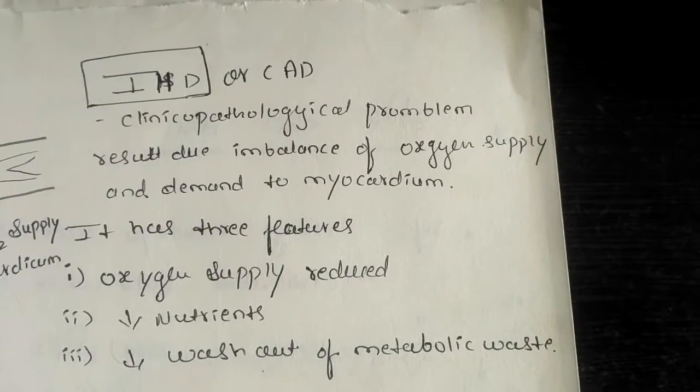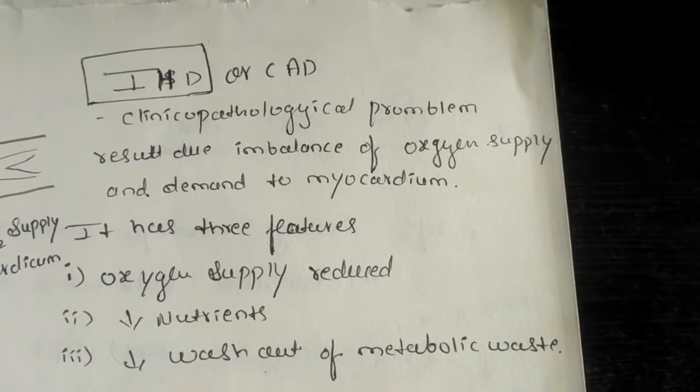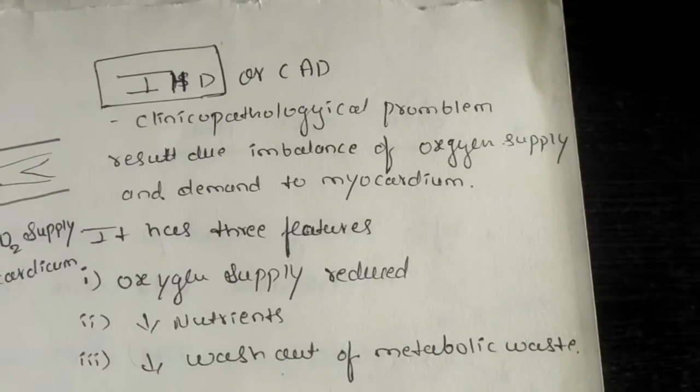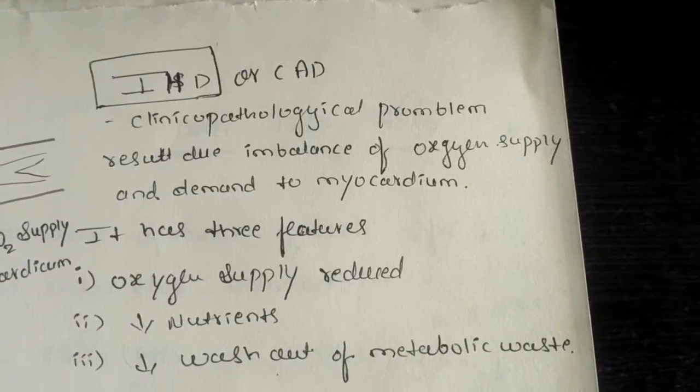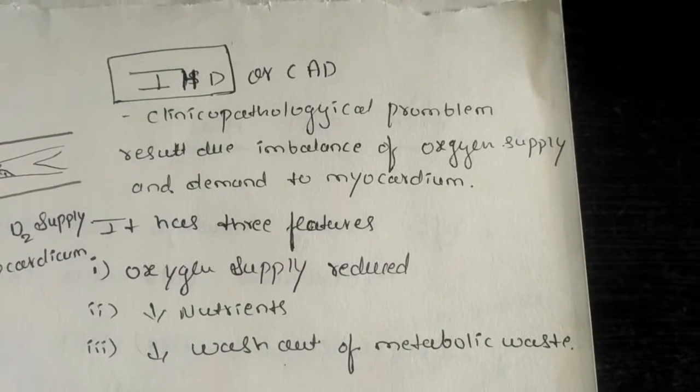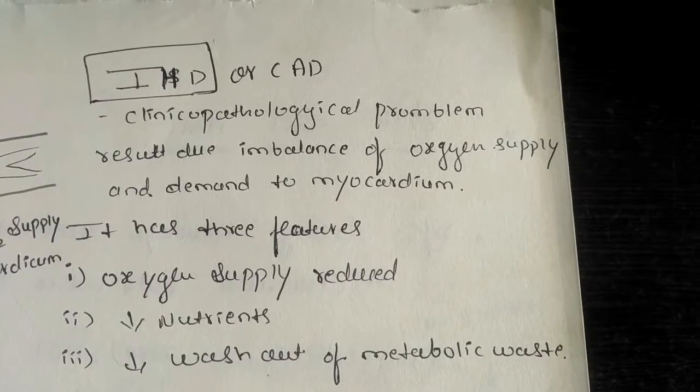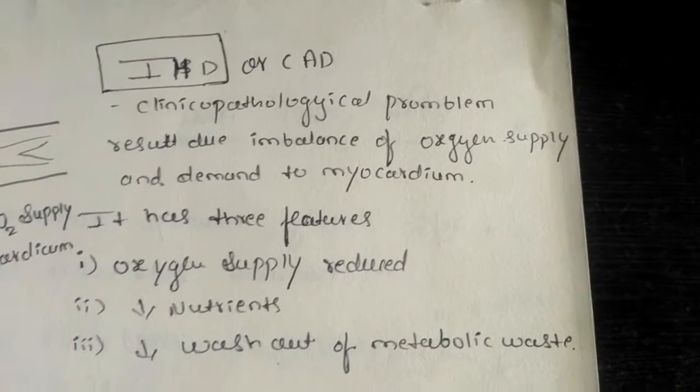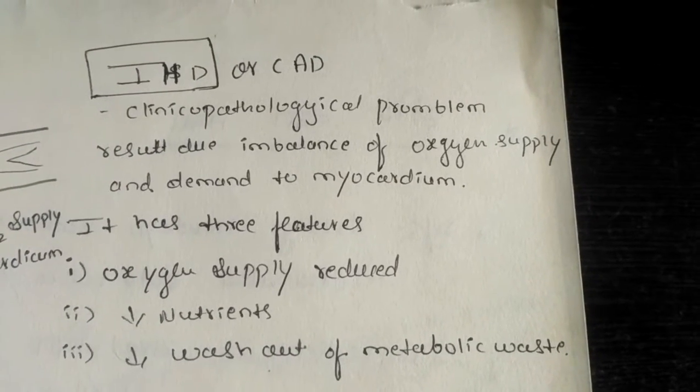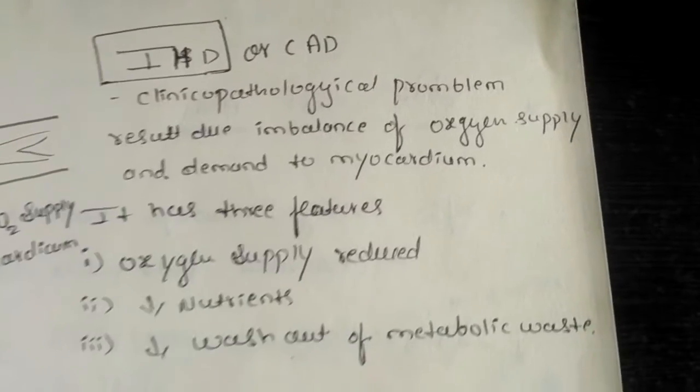Ischemic heart disease. What is the main cause for ischemic heart disease, also called coronary artery disease? It is a clinical pathological problem which results due to imbalance of oxygen supply and demand to the myocardium.